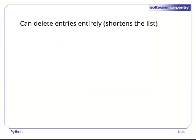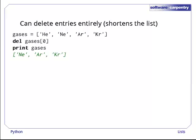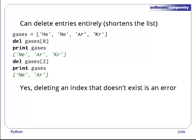As we said a few slides ago, lists are mutable. Their elements can be changed in place. We can also delete elements entirely, which shortens the list. Let's set up our noble gas list again. And then tell Python to delete element zero using the del operator. If we print gases out afterwards, it only has three elements. If we delete element two of this list, which is now the last element since the list's length is three, we're left with a two-element list. And yes, deleting an index that doesn't exist is an error.